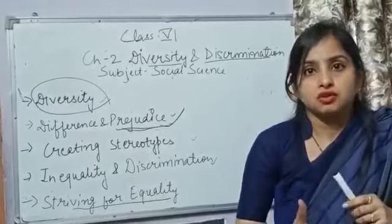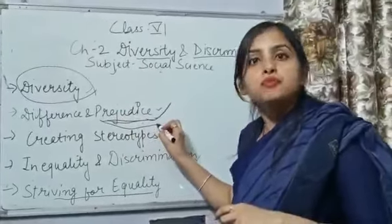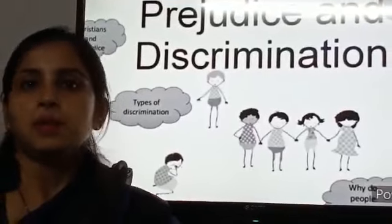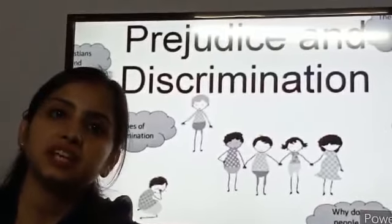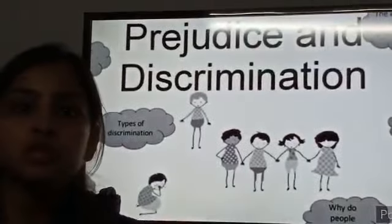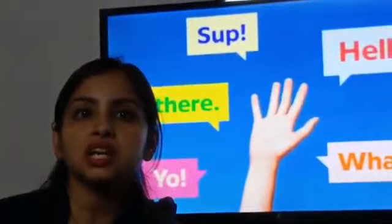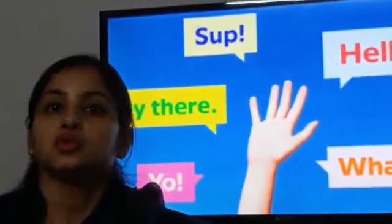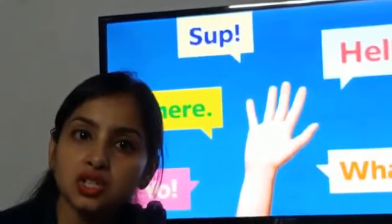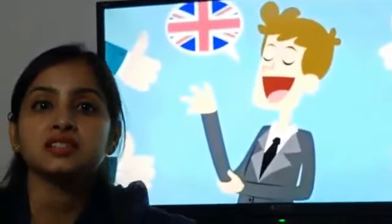This tendency to judge other people negatively and see them as inferior is called prejudice. For example, many people think that those who know how to speak English are superior to others, and those who do not know English are inferior. They do not want to talk to them or be part of their social life. This is what prejudice is.